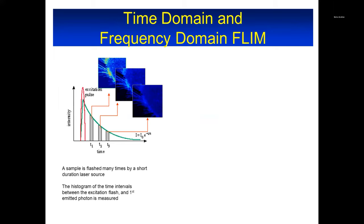The point of FLIM is to do the measurement of the decay in every single point of an image. At time t=0, time t=t1, t2, t3, the intensity will change. An image of 256×256 is about 600,000 points; if you have 1024×1024, it would be about a million points. So we have a million points in the phasor plot, and that makes a difference in the way you do the analysis.